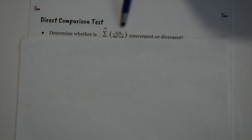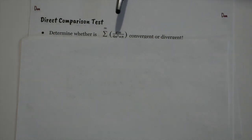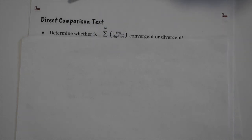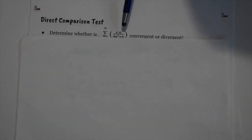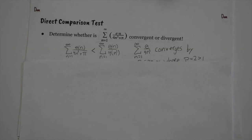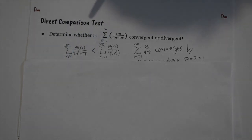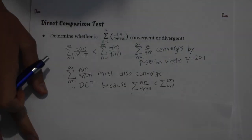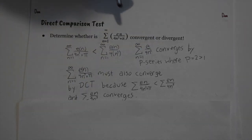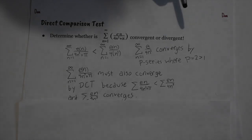For the direct comparison test, we want to find something simple to compare to our series. A good tip is to remove constants and see what the series behaves like — it behaves like e·n / (4n³), so we compare it to that. This simpler series converges by p-series, and since our original series is less than it, it must also converge. We say it converges by DCT and p-series.